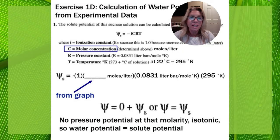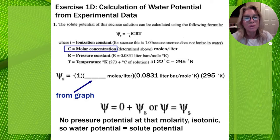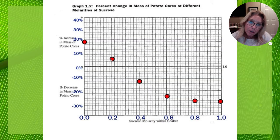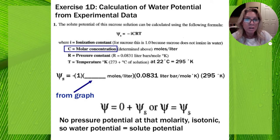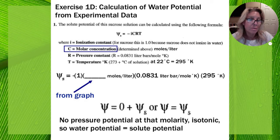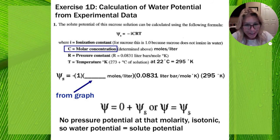To calculate solute potential, you're going to use this formula: solute potential equals negative iCRT. I stands for ionization constant — since we're using sucrose it doesn't ionize, so i equals one. C is the molar concentration from our graph where we predict the best-fit line crosses zero — let's say 0.3 molar. R is a pressure constant, the same for everybody. T is temperature in Kelvin: take the degrees Celsius of the solution and add 273. Multiply it all together and you get the solute potential. Since pressure potential is zero, water potential equals solute potential, and you'll know the water potential of that potato.